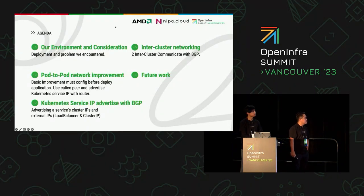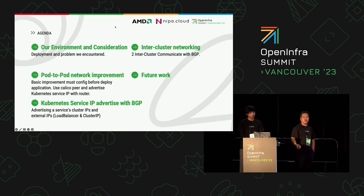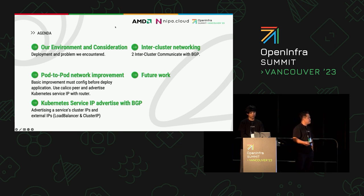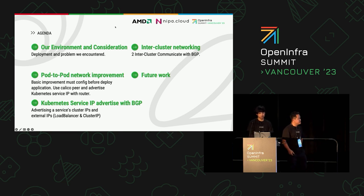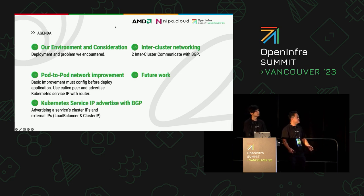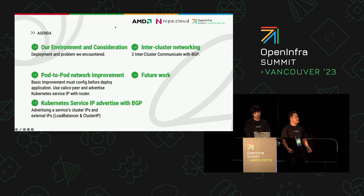For today, we will talk about our environment and considerations when we deploy Kubernetes on OpenStack in the public cloud service. Next, we talk about our pod-to-pod network improvements — basically IP-in-IP mode encapsulation between worker nodes on top of OpenStack. Then we will talk about Kubernetes service IP advertising with BGP, inter-cluster communication with BGP, and finally future work.